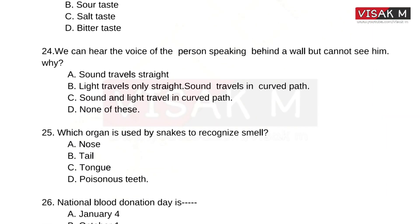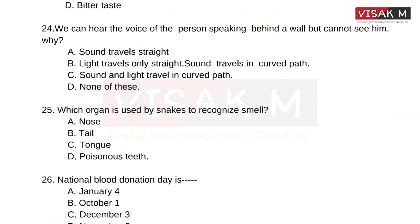We can hear the voice of a person speaking behind a wall but cannot see him — why? Options: A, Sound travels straight; B, Light travels only straight and sound travels in a curved path; C, Sound and light both travel in a curved path; D, None of these.